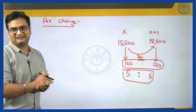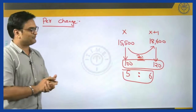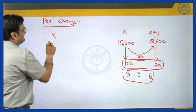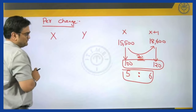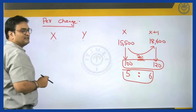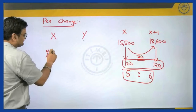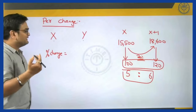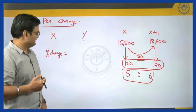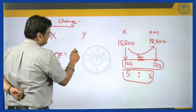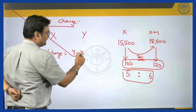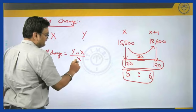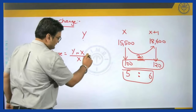That is why we go for calculation of percentage change always — in our problems and in our regular lives. Percentage change is very important. If you have a variable whose value is X in the past and its value is Y currently — so X is the old/previous value and Y is the current value — then the percentage change is given as the difference between the two values upon the initial value. We always divide by the initial value, whatever comes first goes in the denominator, multiplied by 100.